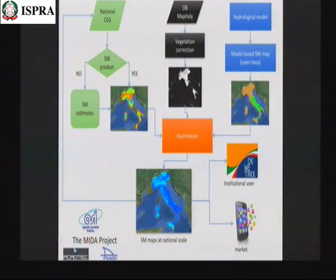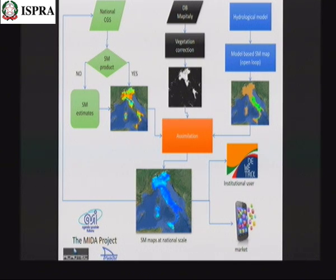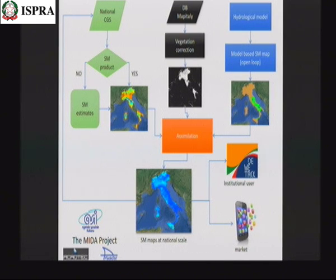We conducted experiments within the MIDA project, financed by the Italian Space Agency for small and medium enterprises. This framework uses the collaborative ground segment and the national collaborative ground segment together with the COSMO-SkyMed constellation to produce national-scale soil moisture maps. The product was tested in the Orba basin, just like the HSAF product, to allow comparison.